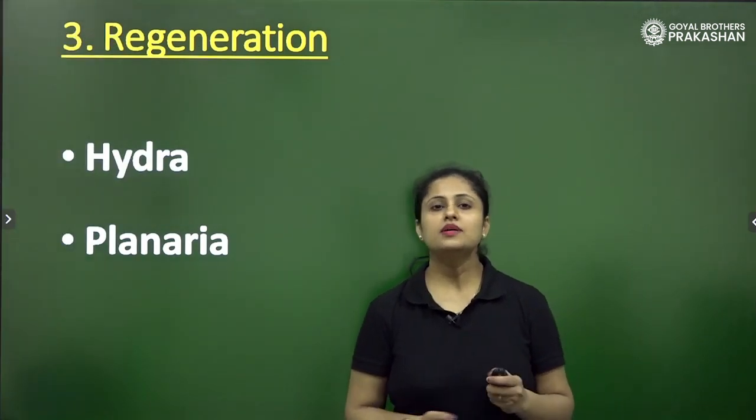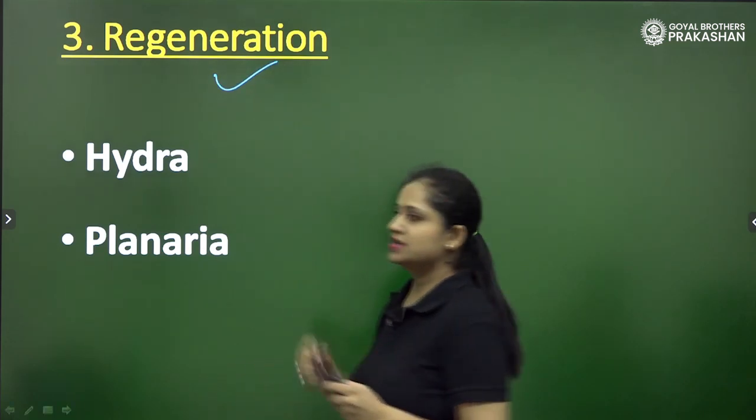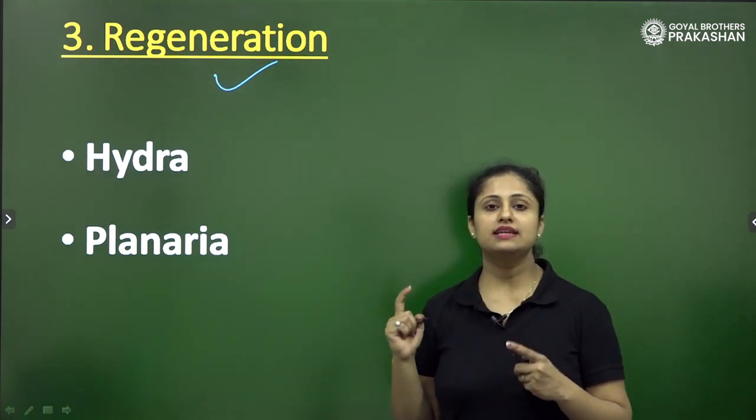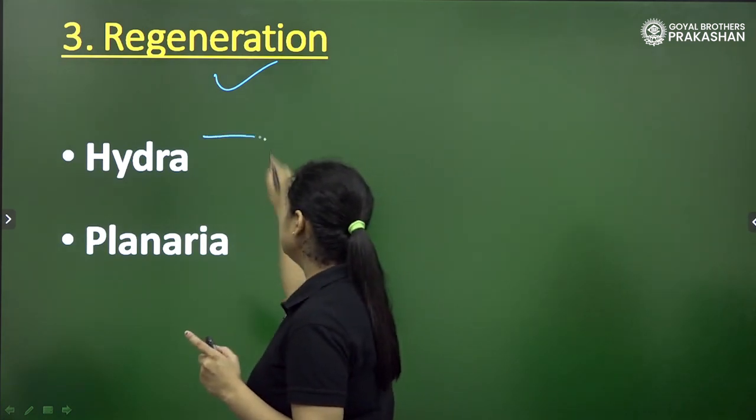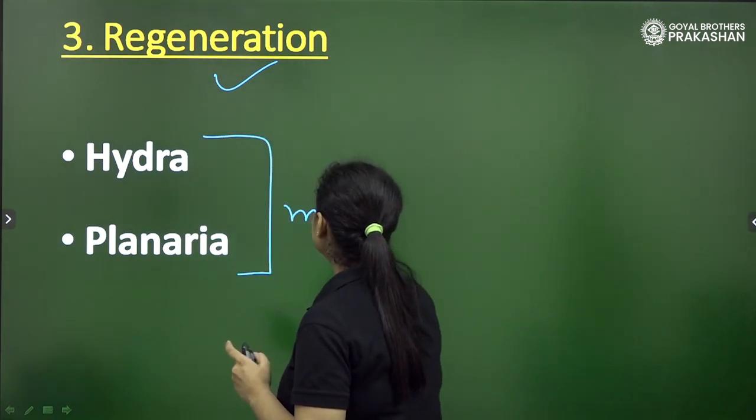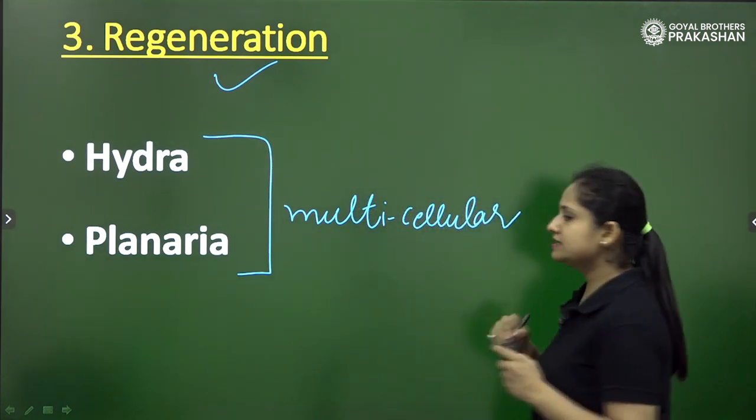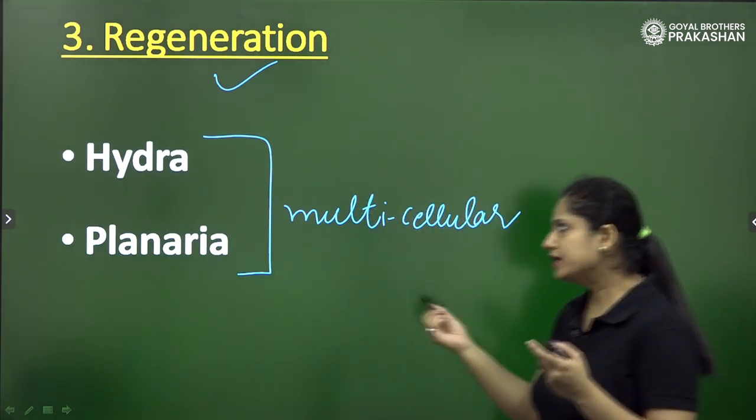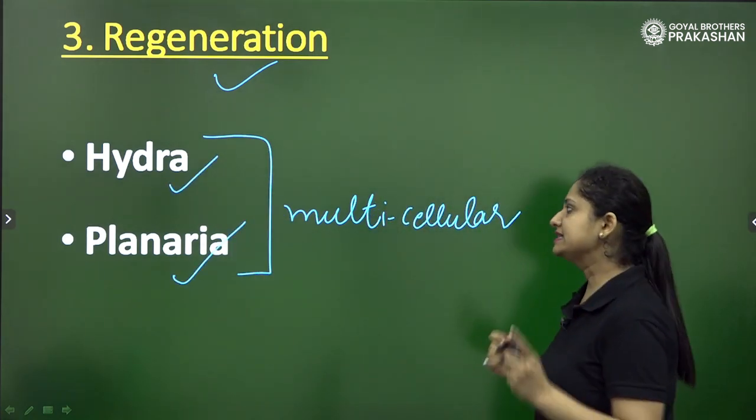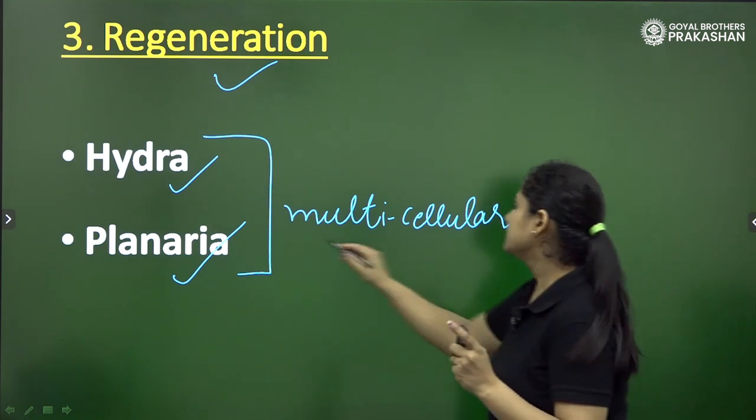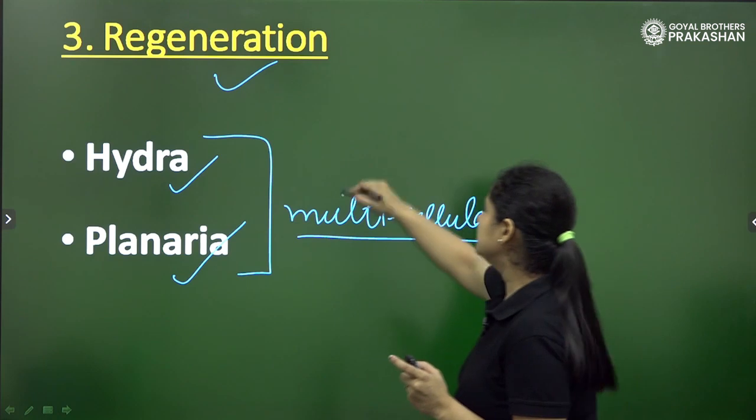Now, come to another mode of asexual reproduction that is regeneration. So regeneration is a type of asexual reproduction which is shown by some multicellular organisms. Those multicellular organisms are for example hydra, planaria, and it's very important to note that in such organisms like hydra and planaria there